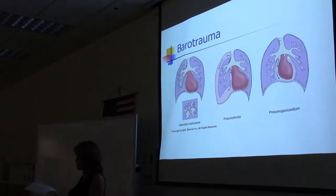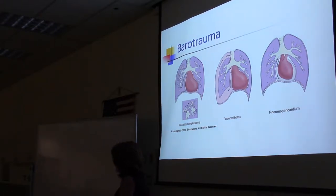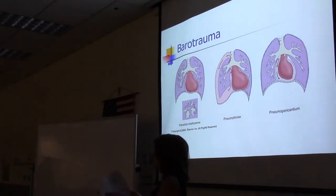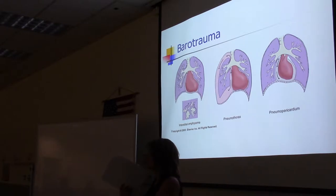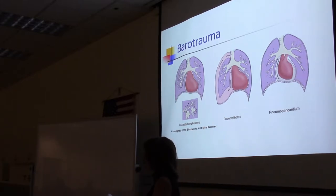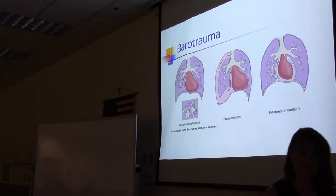Today we'll finish up on physiological effects and complications of positive pressure ventilation. We'll start by talking about different types of barotrauma that occur in the lungs. When you're putting a patient on positive pressure ventilation, it's possible that air can leak somewhere — whether an alveolus ruptures and air gets from the alveolar sac into the interstitial space, across into the pleural space, or even migrating around the heart into the pericardial sac.